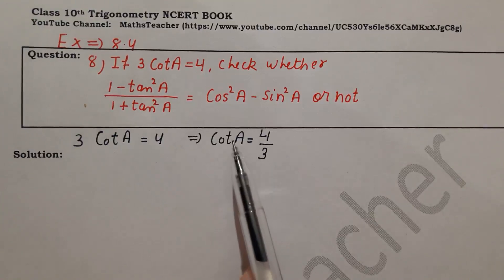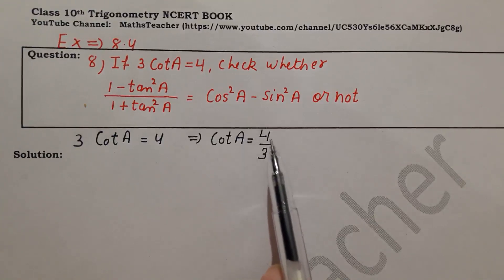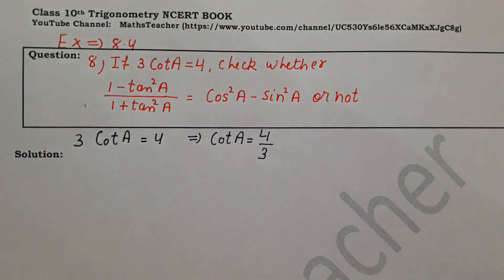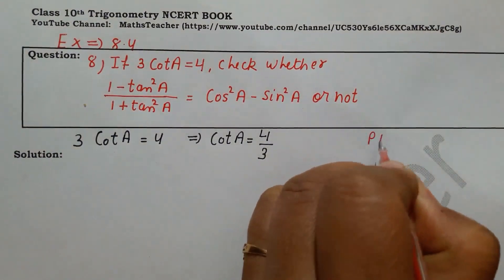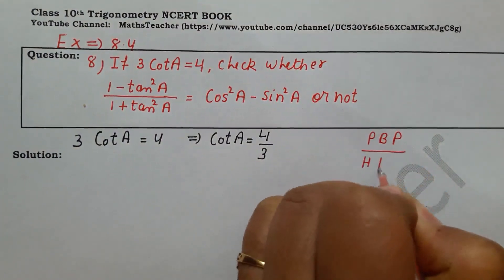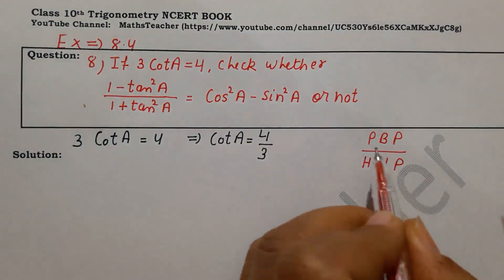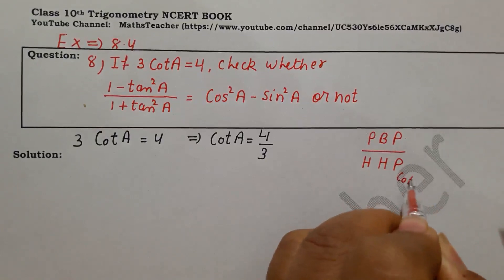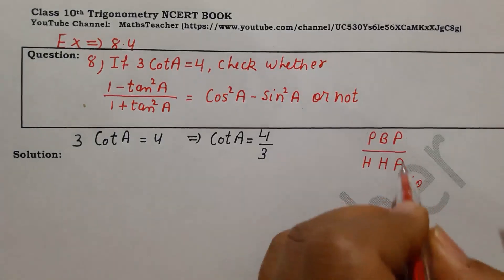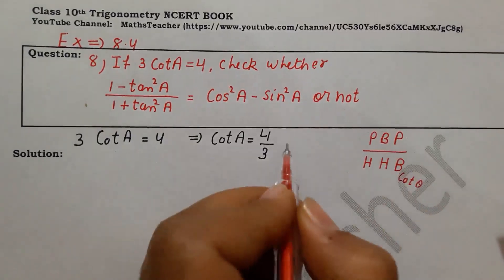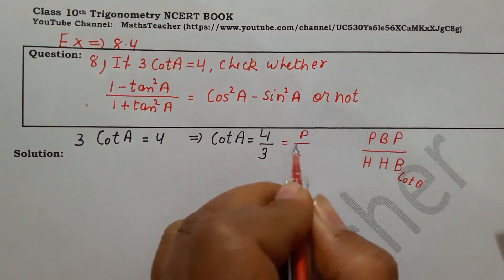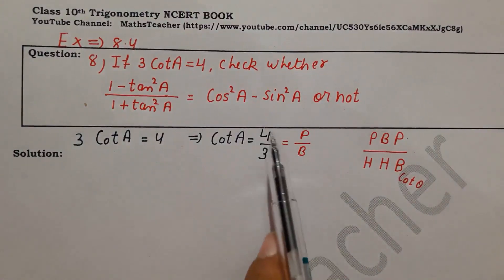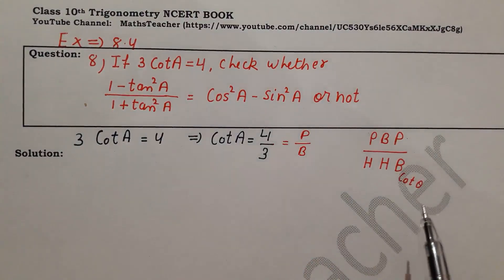For this question I will solve using the triangle method. Cot A is equal to base upon perpendicular — that is B upon P. We know that there are six trigonometric ratios involving perpendicular (P), base (B), and hypotenuse (H).